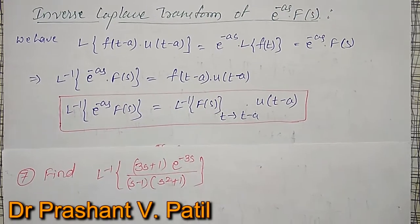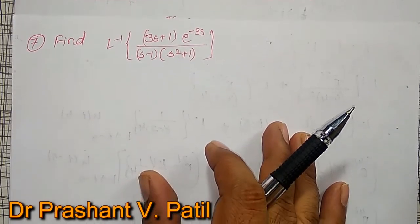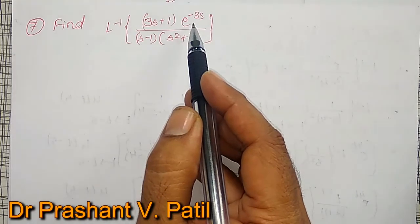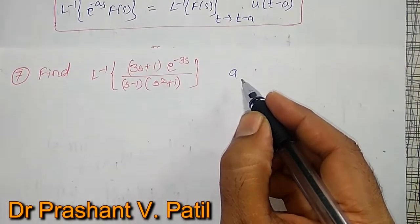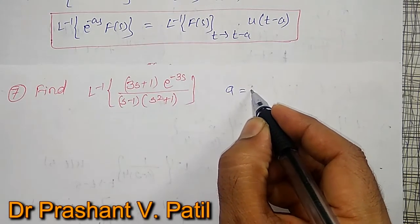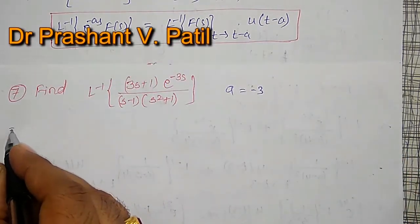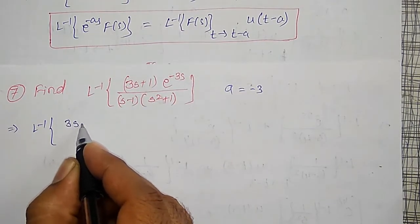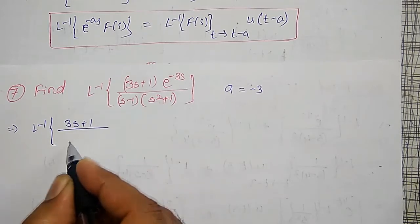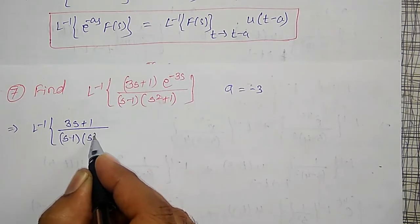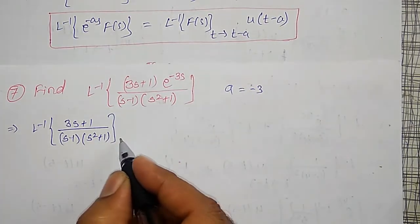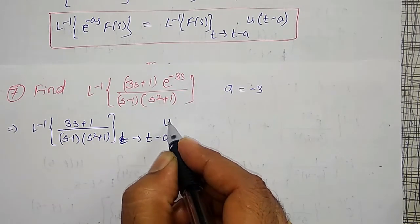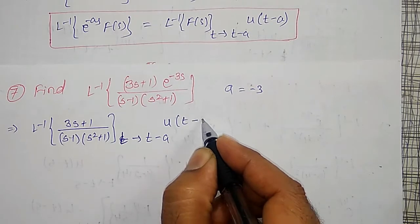In this particular problem: find inverse Laplace Transform of e to the power minus 3s multiplied here. Comparing with that property, a is equal to 3. Therefore, I can write it as inverse Laplace Transform of f(s), that is (3s + 1) divided by (s minus 1) into (s squared plus 1). In this, we have to replace t by t minus 3 and multiply by u(t minus 3).